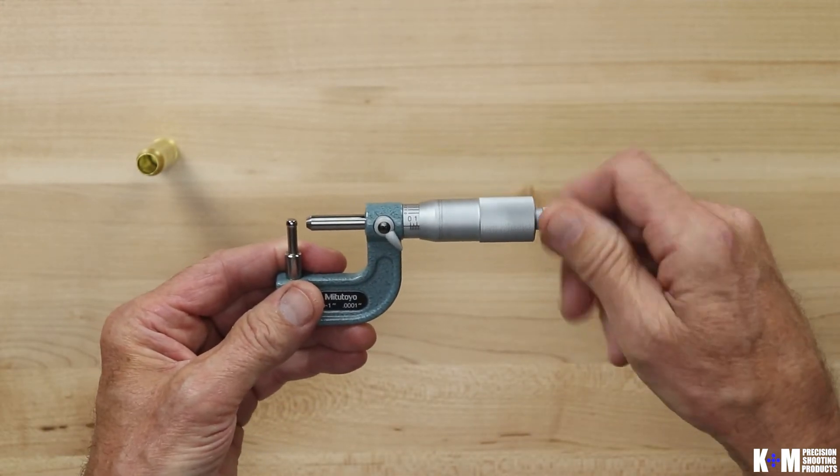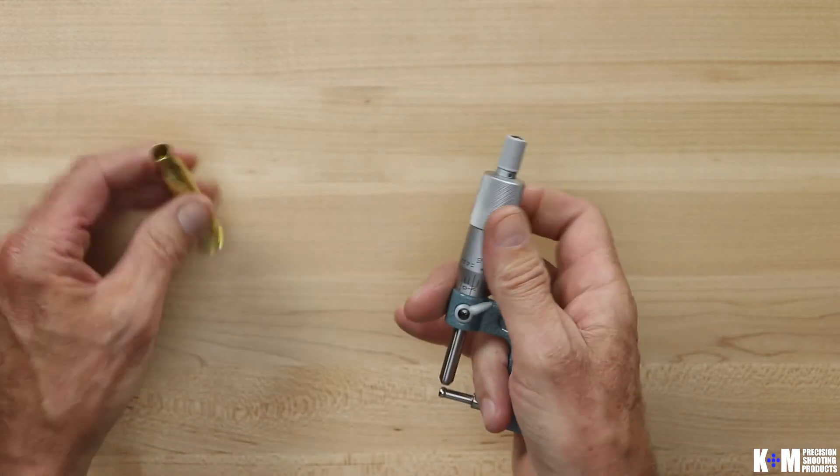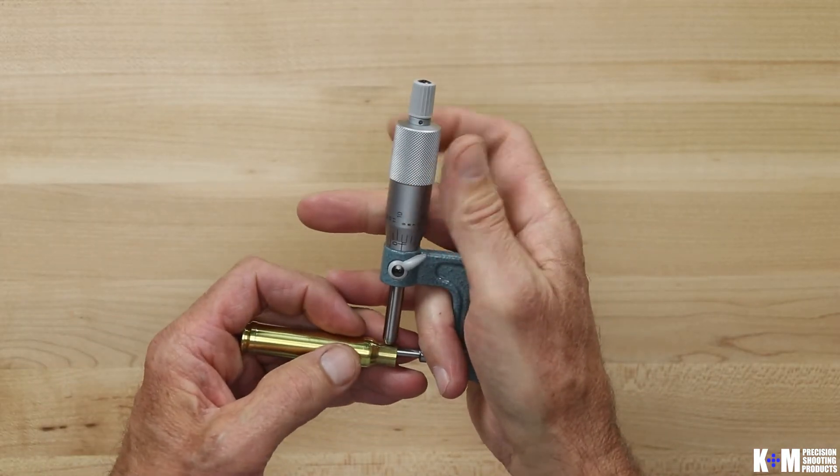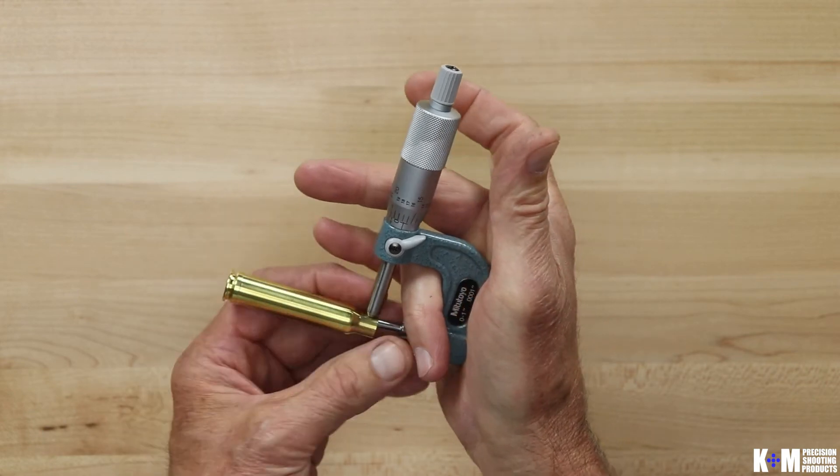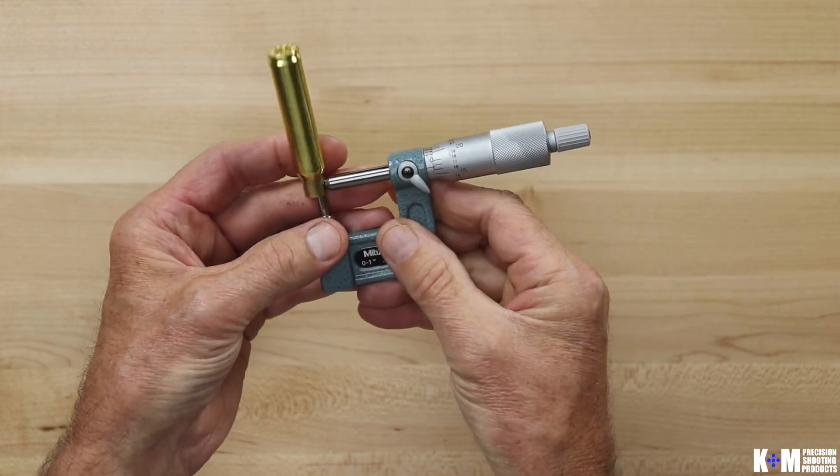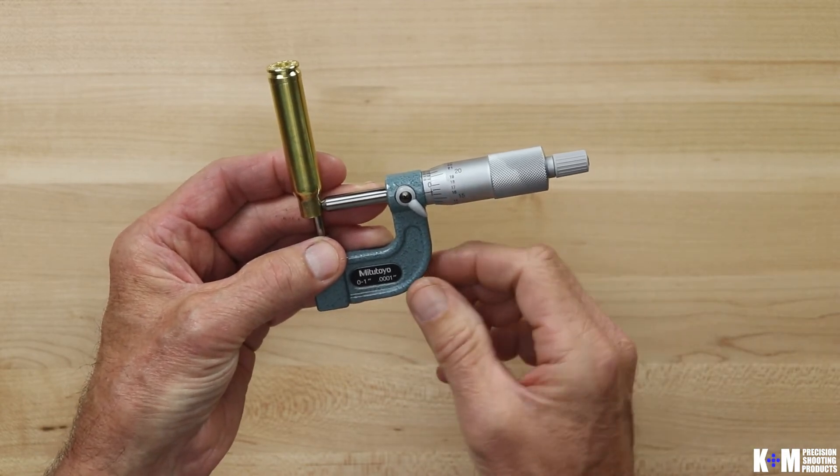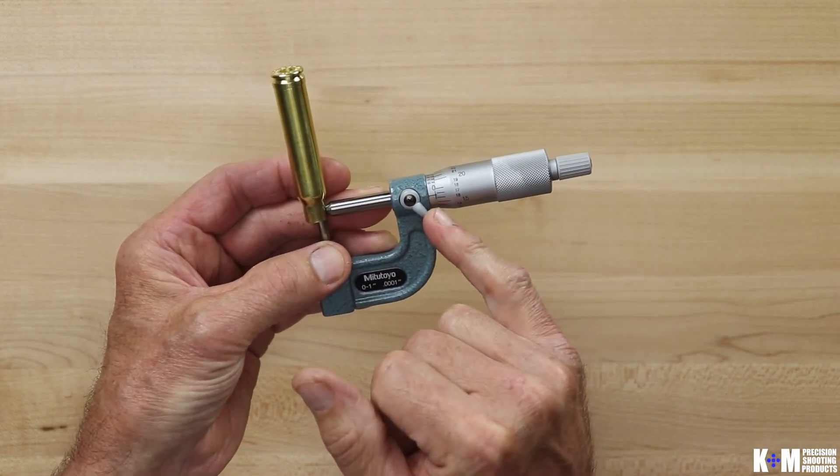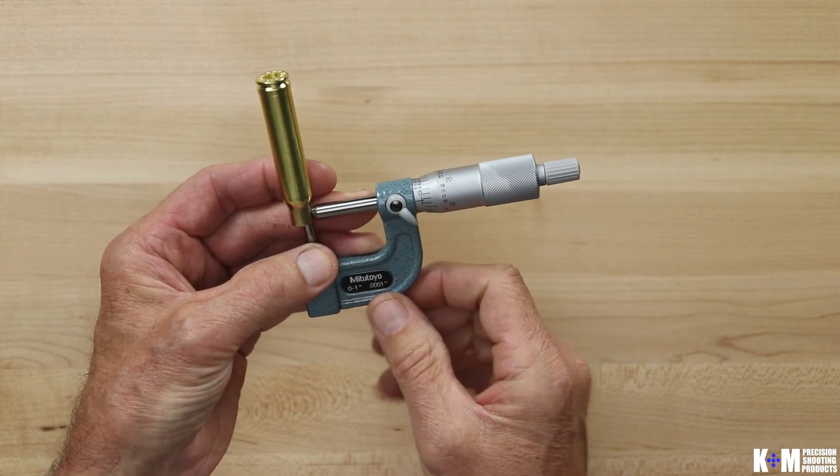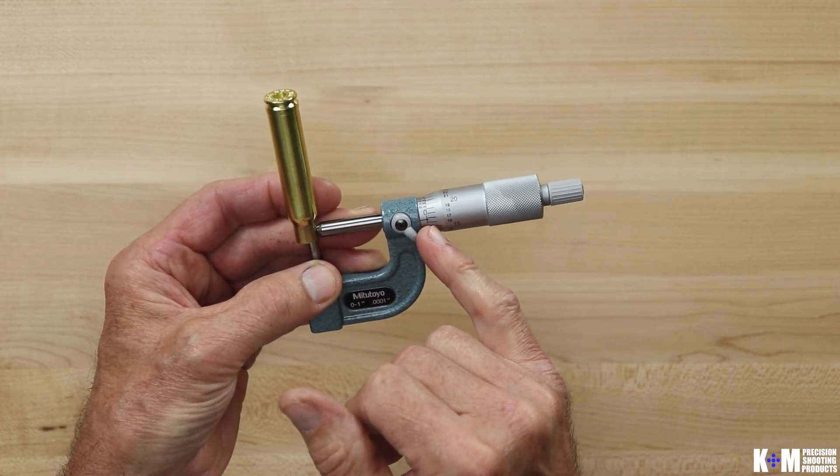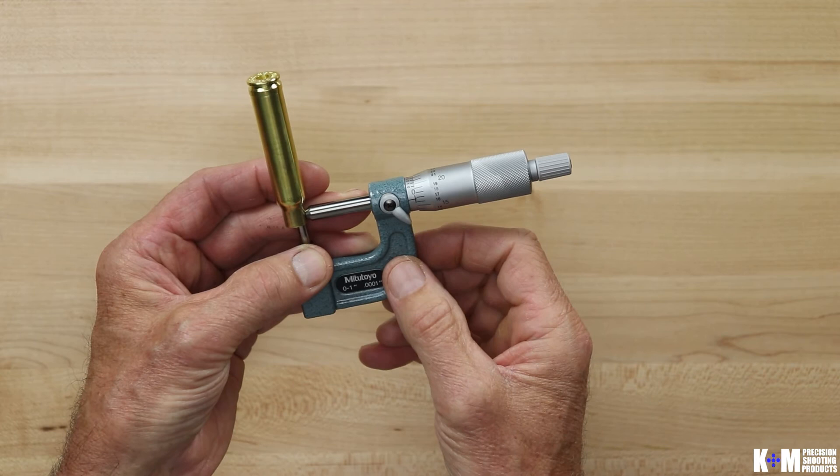So let's go ahead and take a measurement of a neck wall and see what we come up with. Okay so here you can see we've tightened up on the case neck loosely and we'll see that we went up past 16 but not quite to 17. So we already know we're somewhere between 16 and 17 thousandths for thickness.